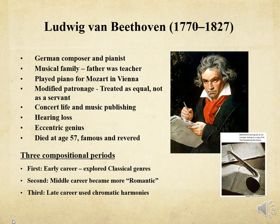Ludwig van Beethoven was born in Bonn in 1770. He was a German composer and pianist who grew up in a musical family; his father was his teacher. Hoping his talented son was another Mozart, Beethoven's father was abusive and made him practice piano for long hours. As a declared child prodigy, he met and played for Mozart and Haydn in Vienna. At the age of 22, he moved to Vienna, where he operated under a modified patronage system. He was not responsible to a specific patron, but was supported financially by many different patrons. His career was further aided by the emergence of the middle-class public, which brought revenue through the growth of concerts and music publishing.